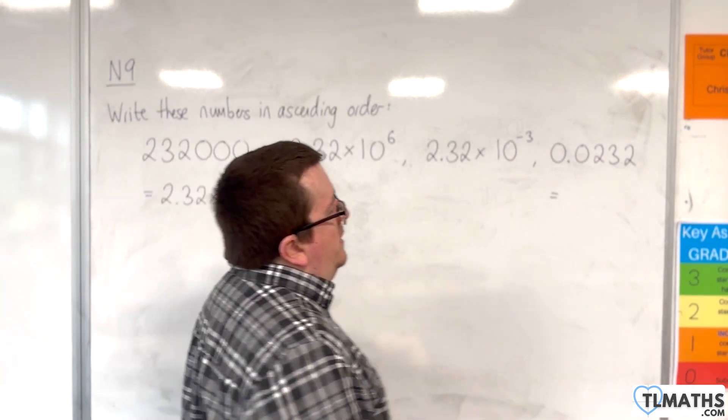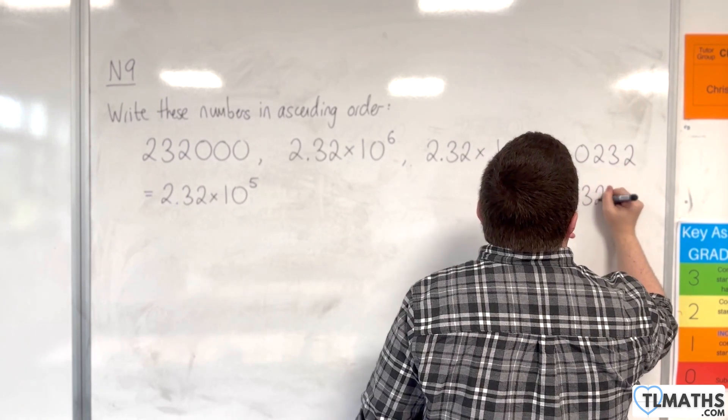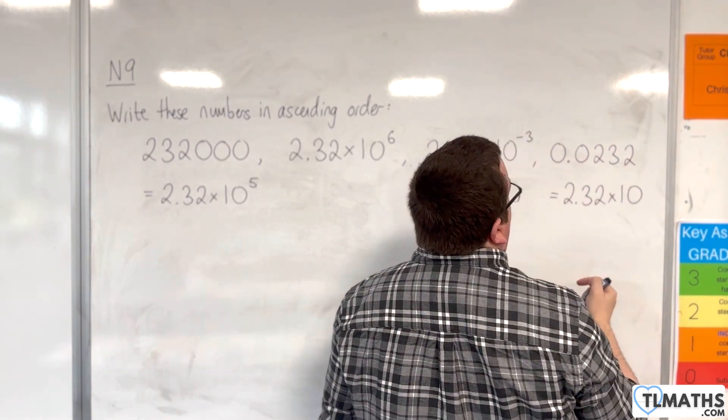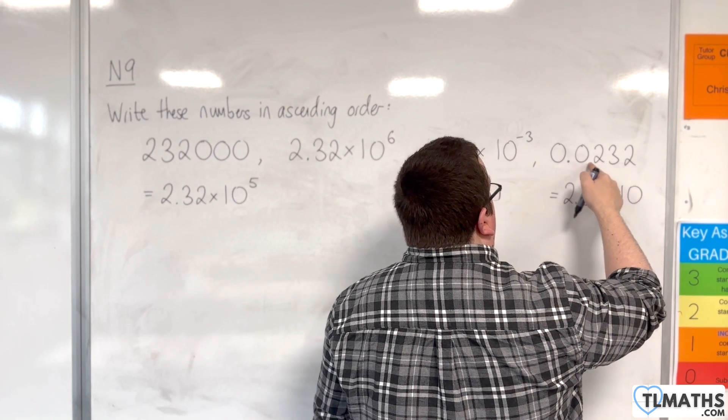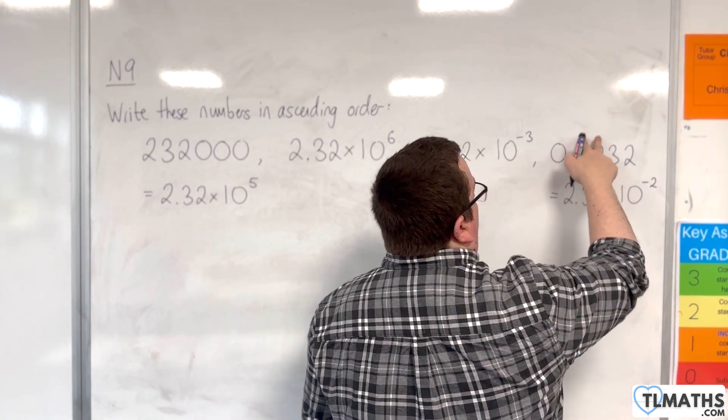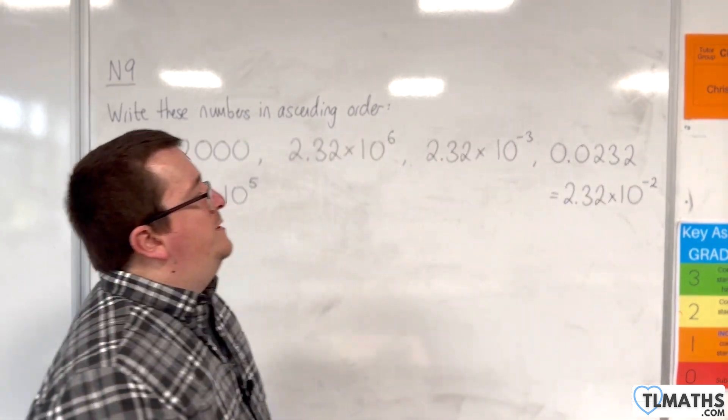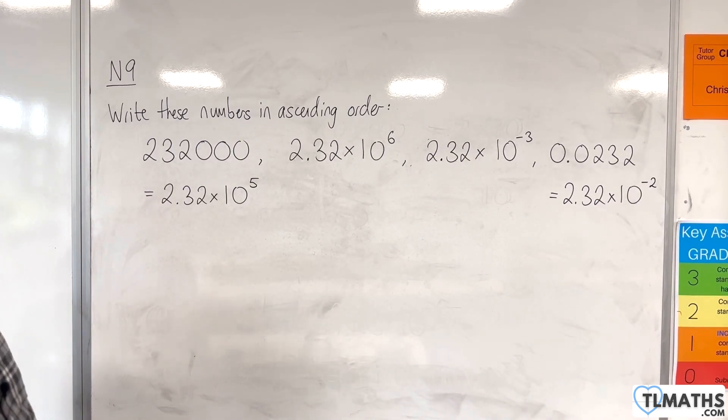And over here, we've got 0.0232, which is 2.32 times 10 to the power of... Well, if the decimal point was there, 2.32, then it needs to go 1, 2 steps to the left, so minus 2. We have two positions there to the right of the decimal point, including the 2. So now we've done that,